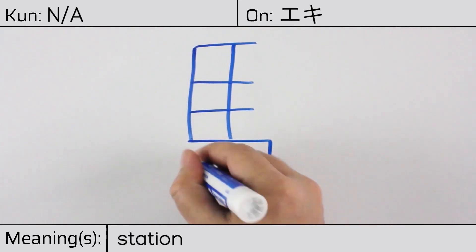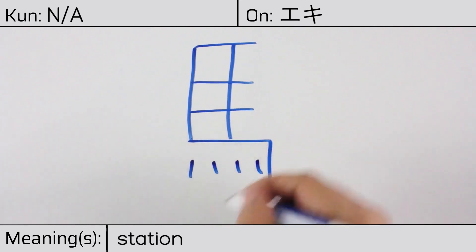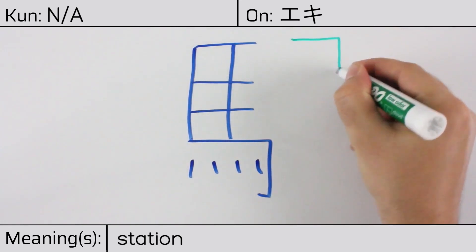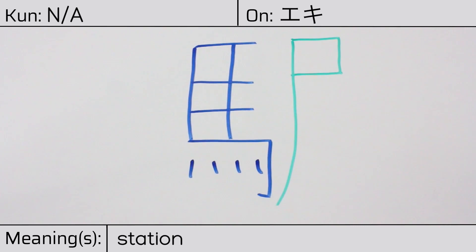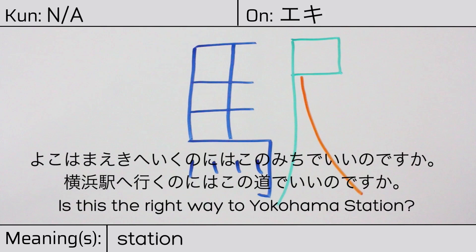You can remember this Kanji by the following hint: Stables along highways with small stalls for horses, which eventually became train stations. Our example sentence is: Is this the right way to the Yokohama station?